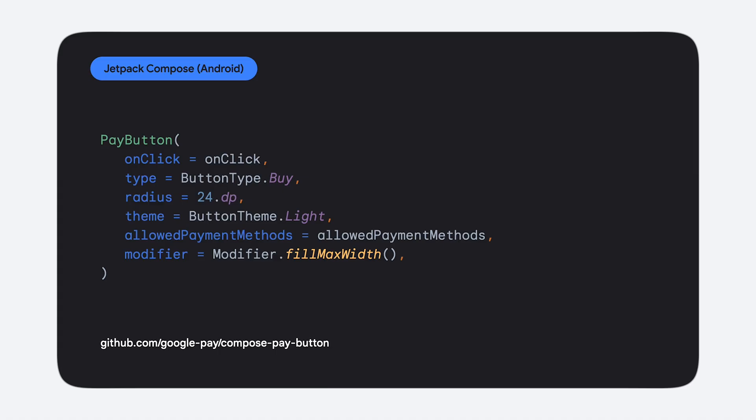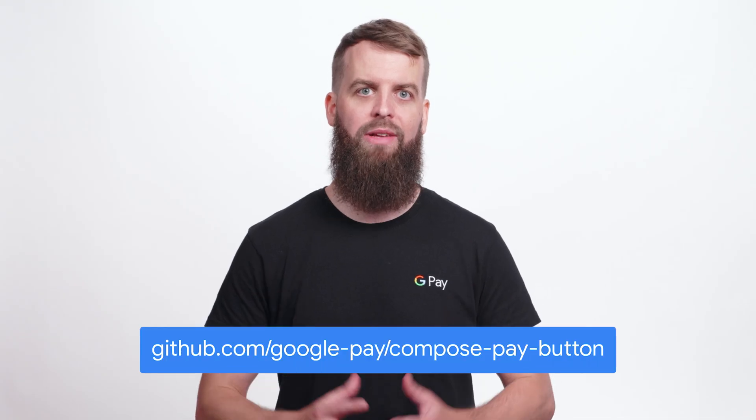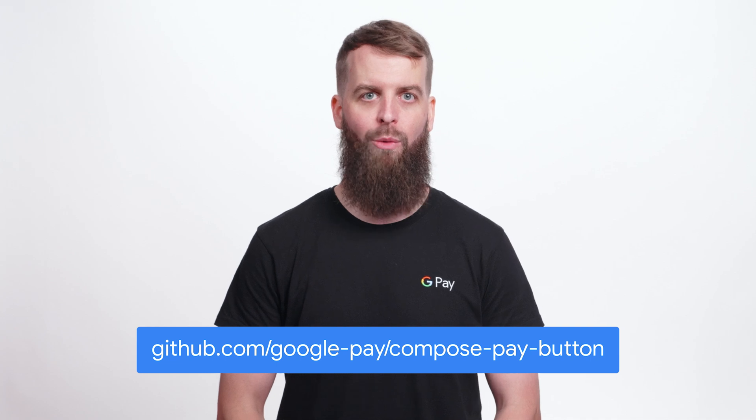Enough advertisement. Let's see how you can easily implement this for your Android or web application. On Android, we provide a Jetpack Compose library for you to easily add the Google Pay button to your layouts. It allows you to easily configure the allowed payment methods and other properties like the theme or border radius. Check out the GitHub repository below for more information on the Jetpack Compose library.